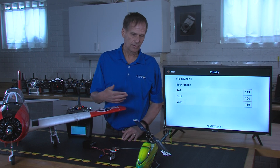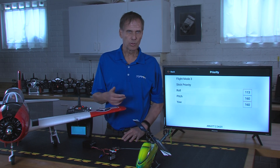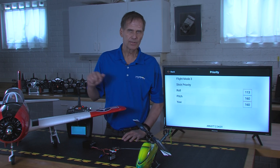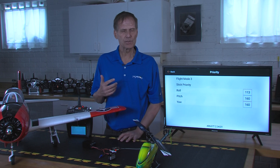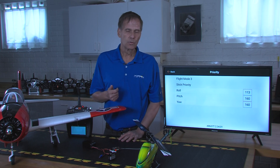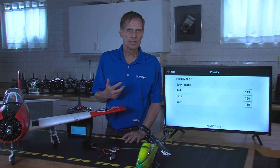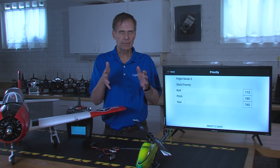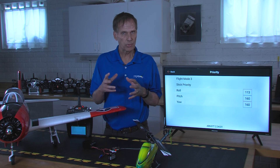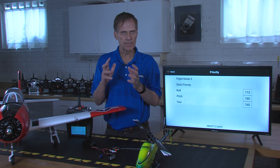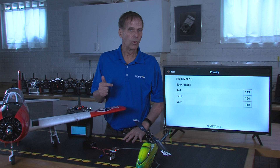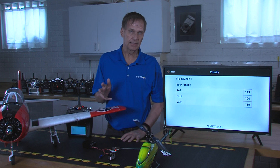There were a few people that could do it — Curtis Youngblood, for example, could kind of pull it off — but doing backwards rolls, backwards loops, and things like that were pretty much impossible until heading hold came along. Some really smart people came up with the idea to incorporate heading hold. What heading hold does — as opposed to rate mode, which is basically a damper that slows down the intended rate of rotation influenced by external forces like wind — is it actually maintains that heading.